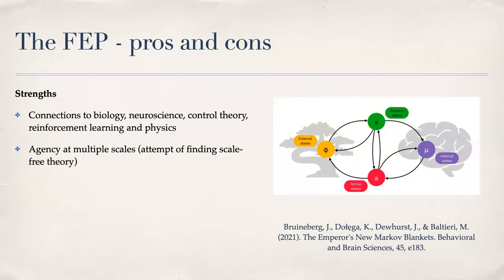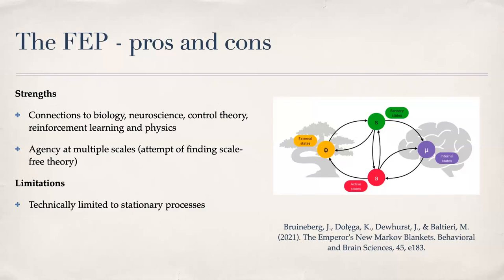The Free Energy Principle makes an assumption that agency is scale-free — we can describe agency across all different levels using the same exact mathematical framework. It's up to you whether you buy that. As for limitations, it is technically limited only to stationary processes, which makes it not very interesting for biological systems — it doesn't cover reproduction, evolution, or growth.